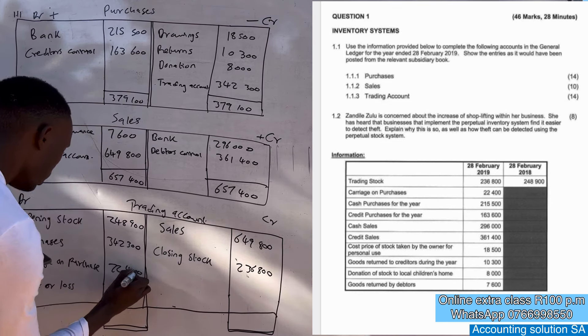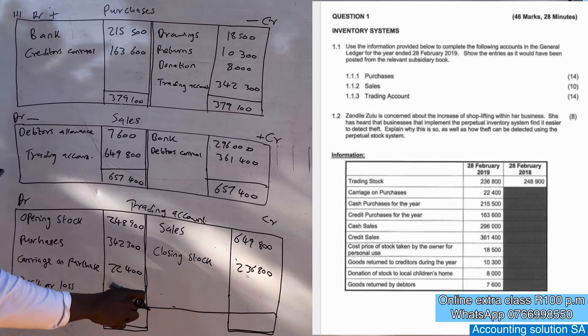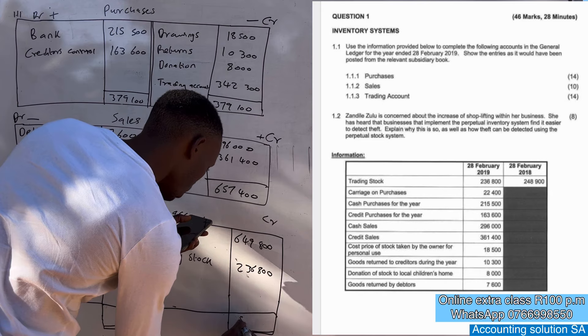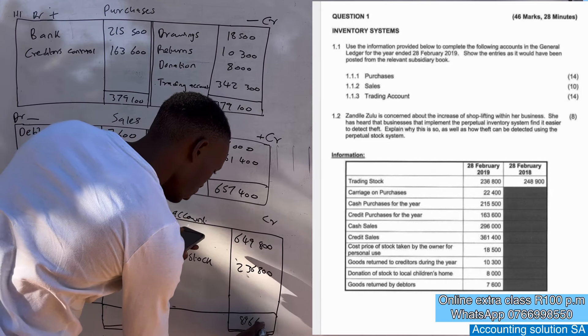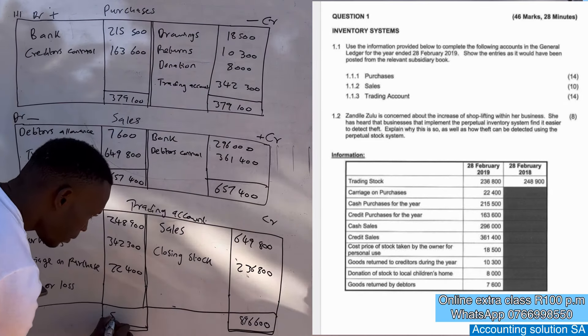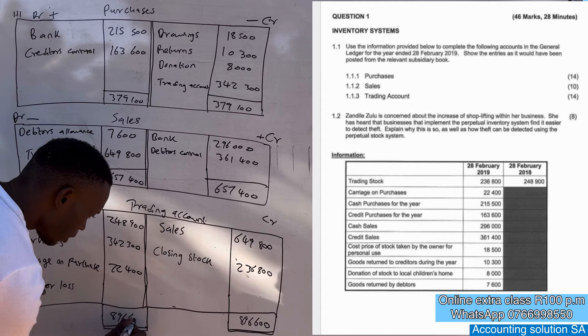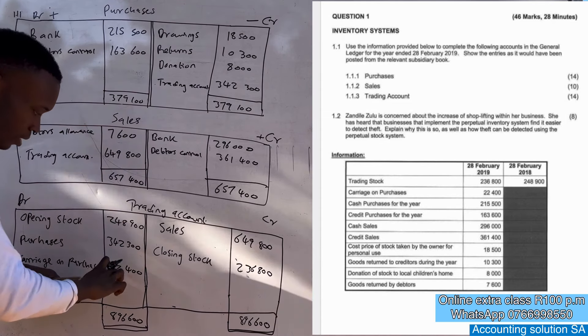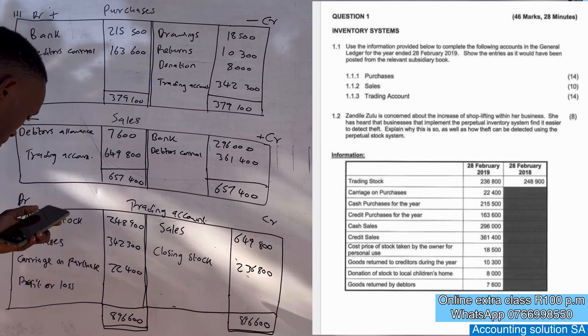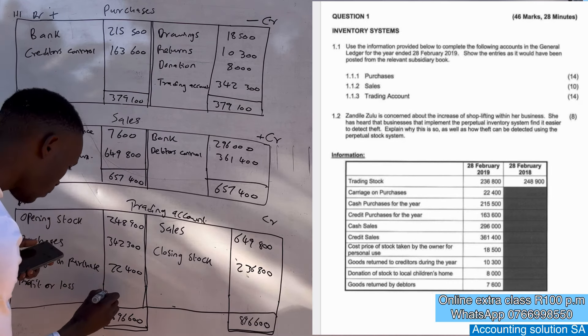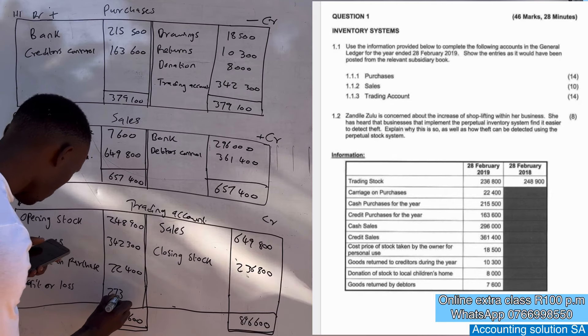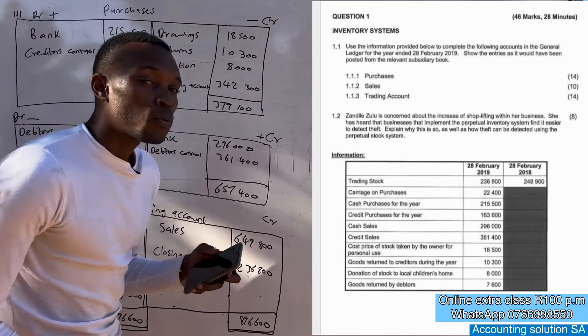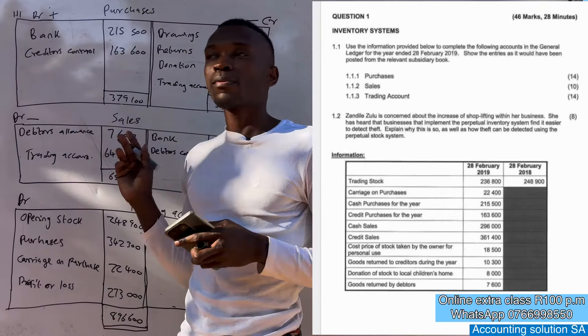Then this side is the one which is higher so here we are going to say total is 896,600. 896,600, then we get profit or loss as a balancing figure by subtracting this to this one and you will get amount of 273,000. That's how you do it, it's very simple and very straightforward.